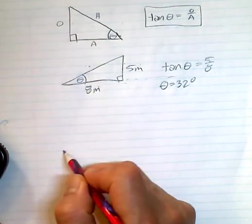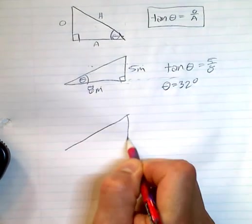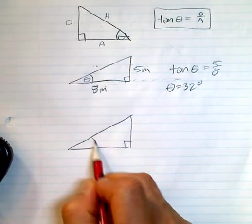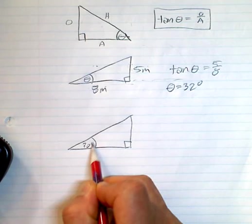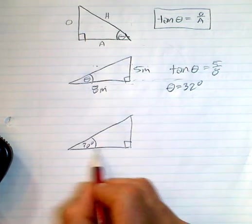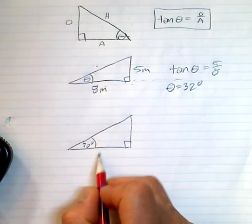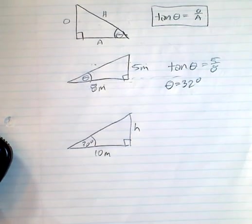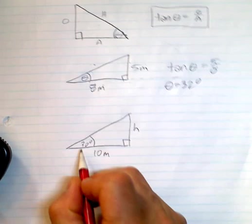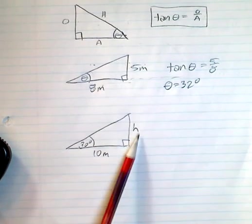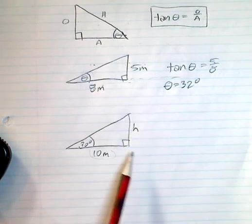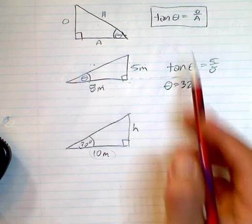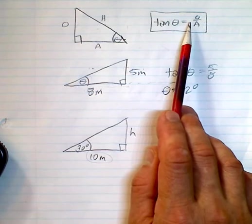Say that's 30 degrees. You have this length here you can measure off the ground as being say 10 meters and you're looking for the height. Now Pythagorean theorem might be something that you could use if you had two sides, but you don't have two sides, you only have one side. So this is where this whole idea of tan theta equals O over A comes in.